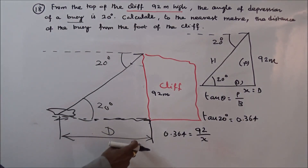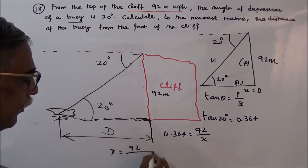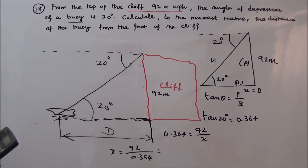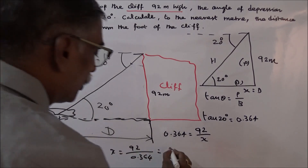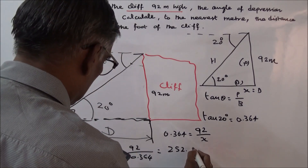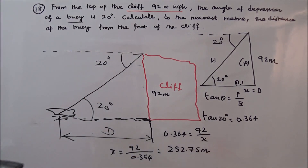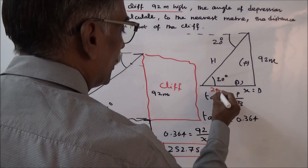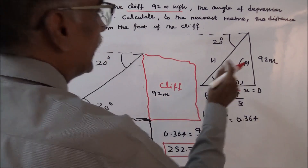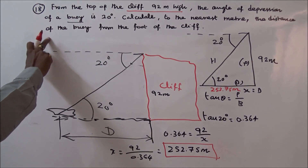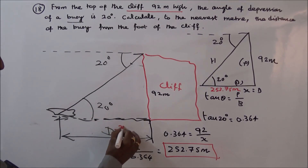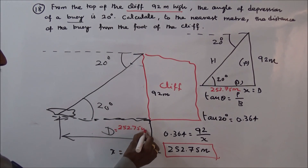That is the distance between the boy and the foot of the cliff. Therefore, X is equal to 92 by 0.364, which equals 252.75 meters. This distance is 252.75 meters — that is the distance of the boy from the foot of the cliff. So D is equal to 252.75 meters. This is the answer.